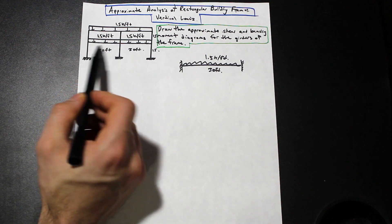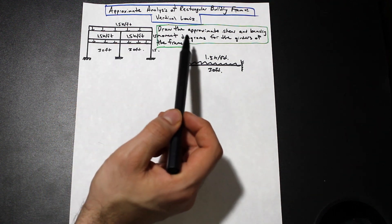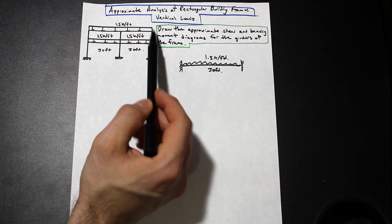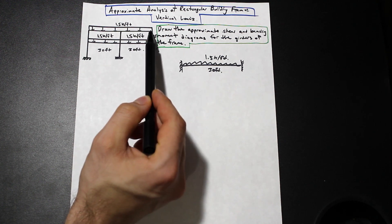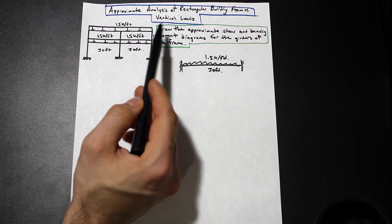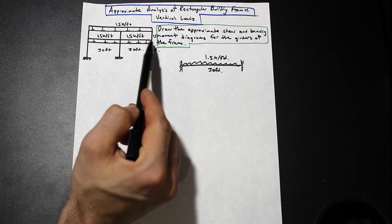So we have a frame here. It's subjected to uniform loads and we're asked to draw, and it's rectangular. It's fixed and we have a rigid or some sort of restraint on the joints.